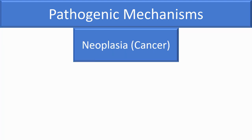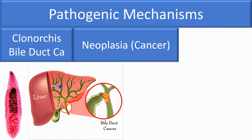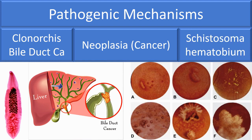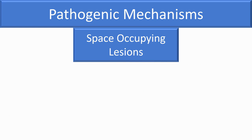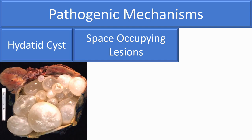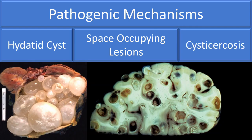Some parasitic infections cause neoplasia or cancers — for example, the liver fluke Clonorchis may produce bile duct carcinoma, and Schistosoma haematobium may cause urinary bladder cancer. Another manifestation is space-occupying lesions: some parasites produce cystic lesions that compress surrounding tissue or organs — for example, hydatid cysts in the liver and cysticerci in the brain.